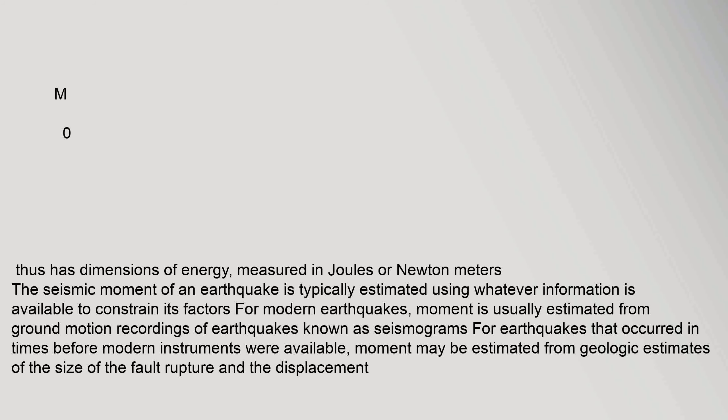References: Aki, Keiiti, 1966. Generation and propagation of G waves from the Niigata earthquake of June 14, 1964. Part 2: Estimation of earthquake moment, released energy, and stress-strain drop from G wave spectrum. Bulletin of the Earthquake Research Institute, 44, pages 73–88.